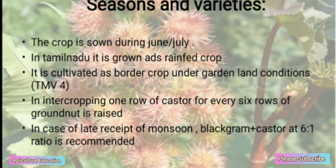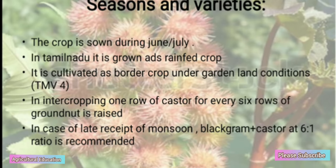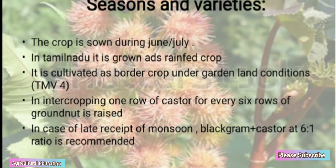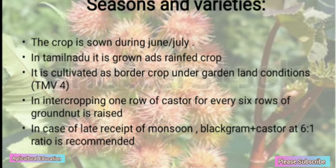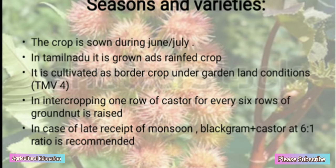Season and Varieties: The crop is sown during June to July. In Tamil Nadu, it is grown as a rain-fed crop and cultivated as a broad crop under garden-land condition. In intercropping, one row of castor for every six rows of groundnut is raised. In case of late receipt of monsoon, black gram plus castor at 60:1 ratio is recommended.